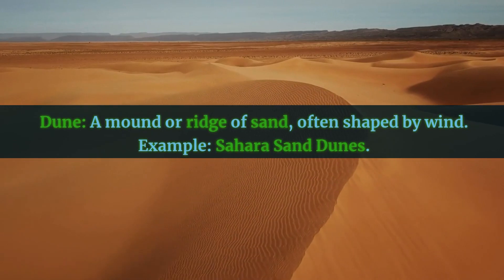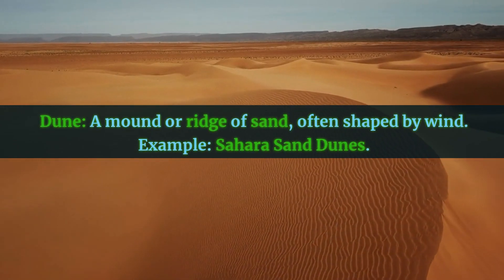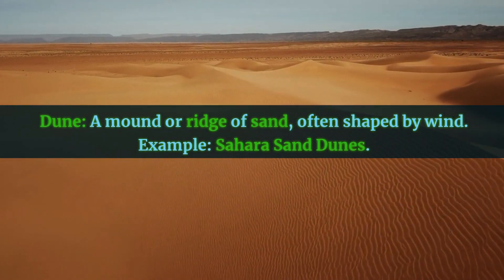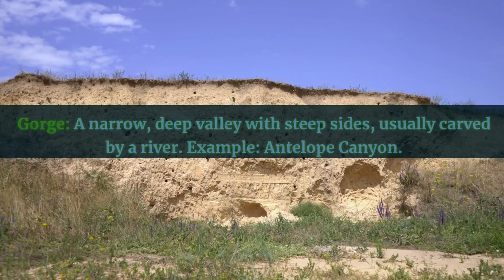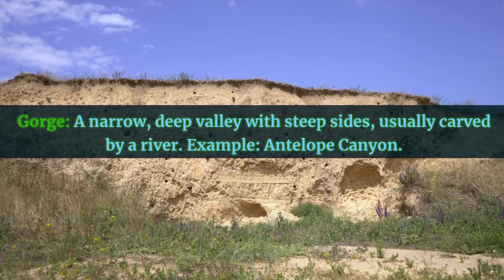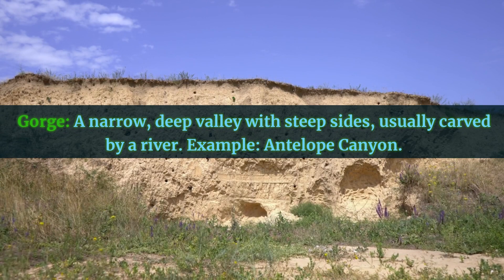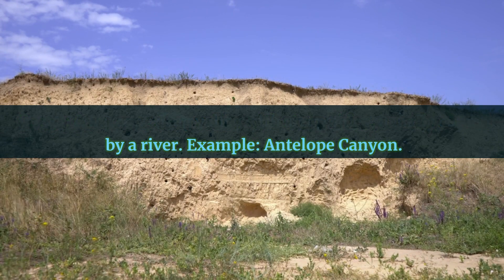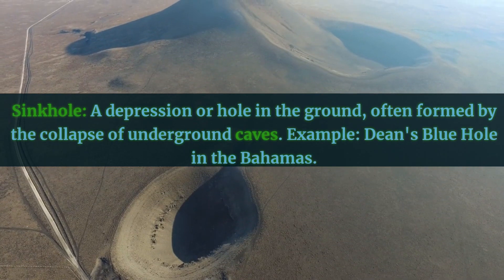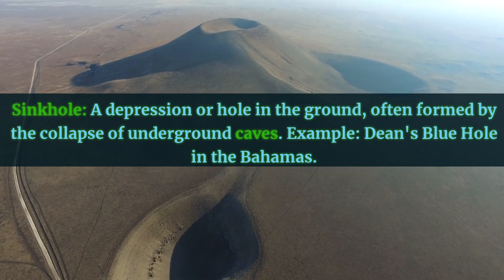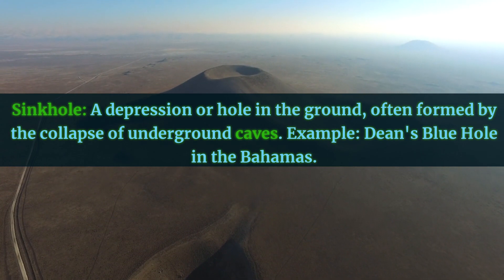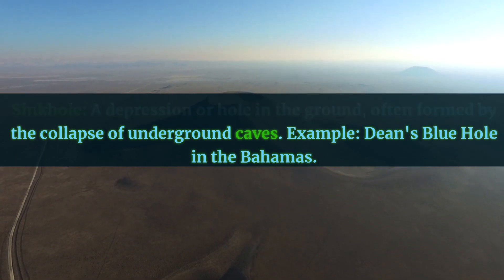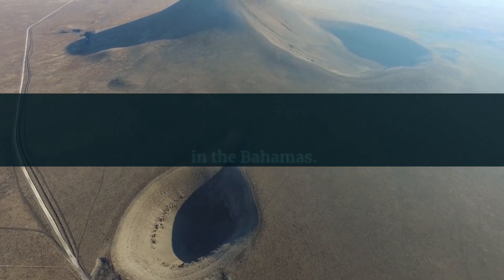Dune: a mound or ridge of sand, often shaped by wind. Example: Sahara Sand Dunes. Gorge: a narrow, deep valley with steep sides, usually carved by a river. Example: Antelope Canyon. Sinkhole: a depression or hole in the ground, often formed by the collapse of underground caves. Example: Dean's Blue Hole in the Bahamas.